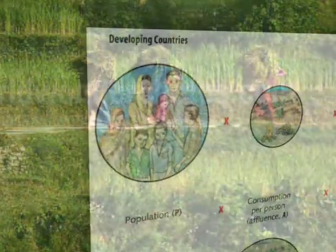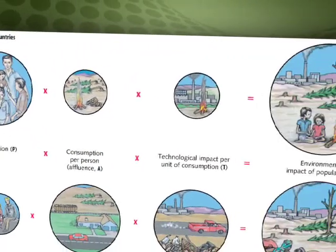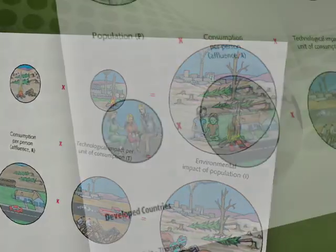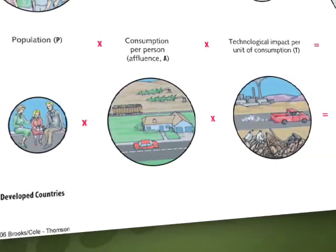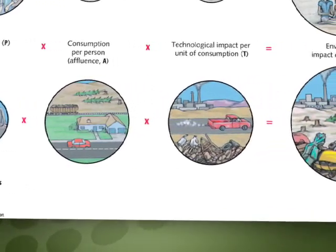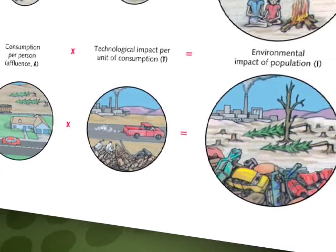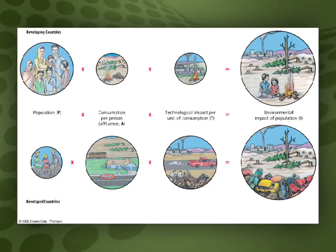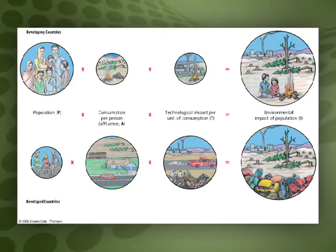There are many more people in the developing world, but the level of impact per person is relatively low. However, in the developed world, population growth is low, but due to their relative wealth, each person's effect on the environment is much more substantial. As this illustration demonstrates, there is a major difference in how developing and developed countries affect our environment.